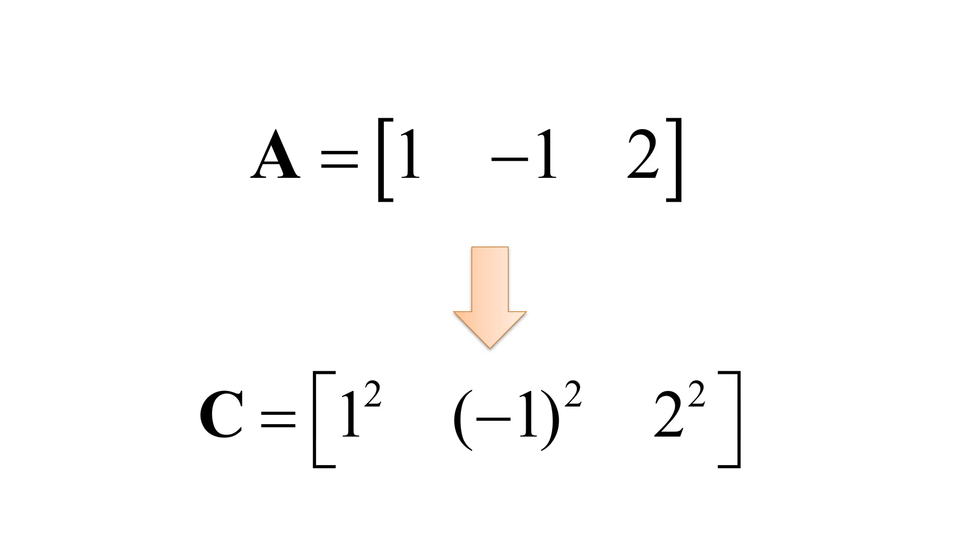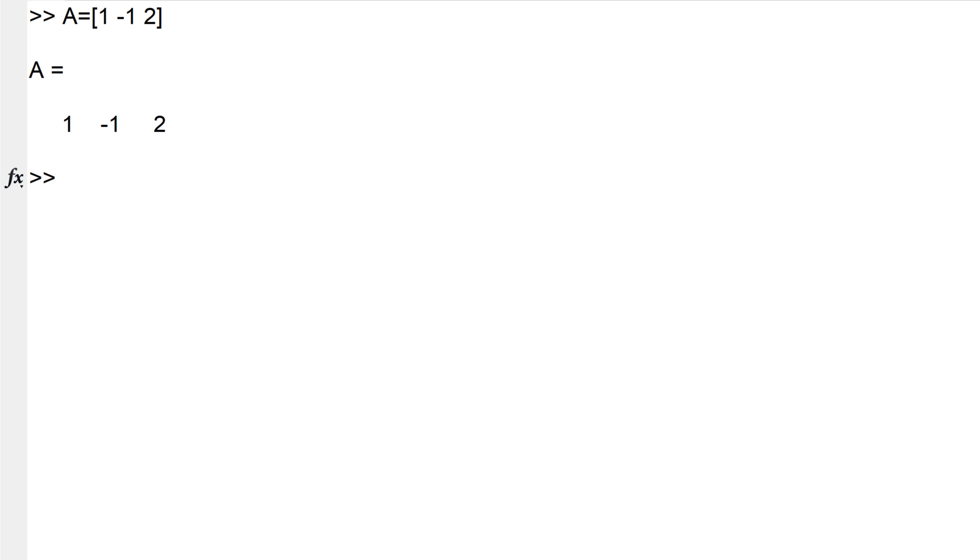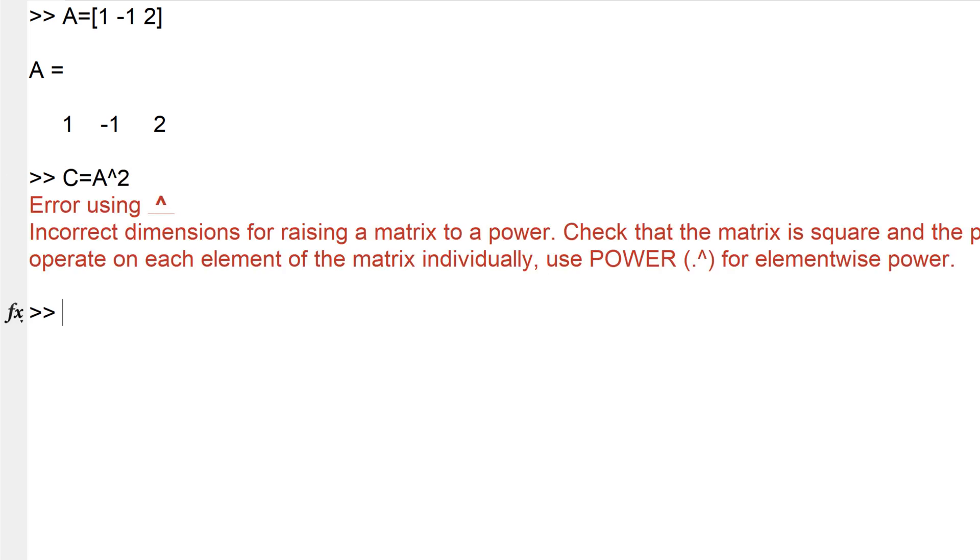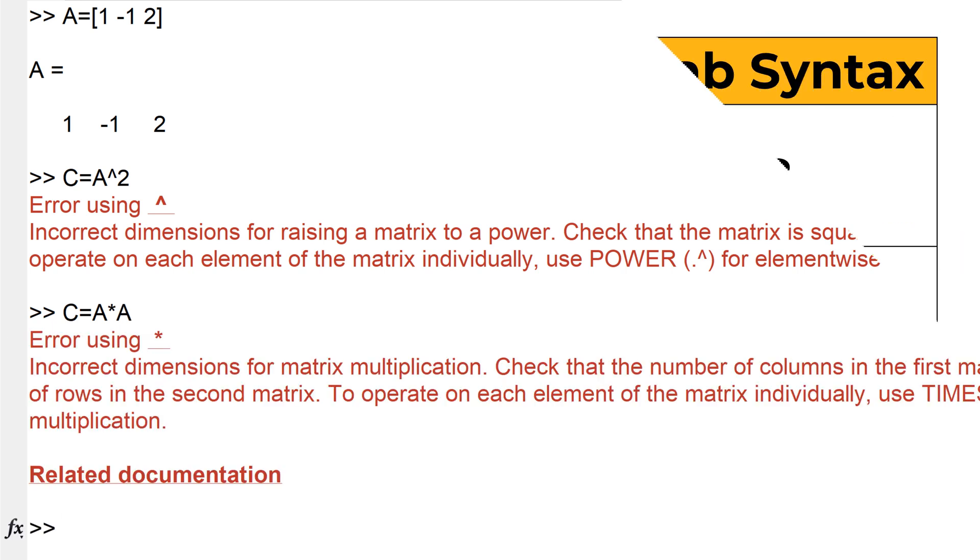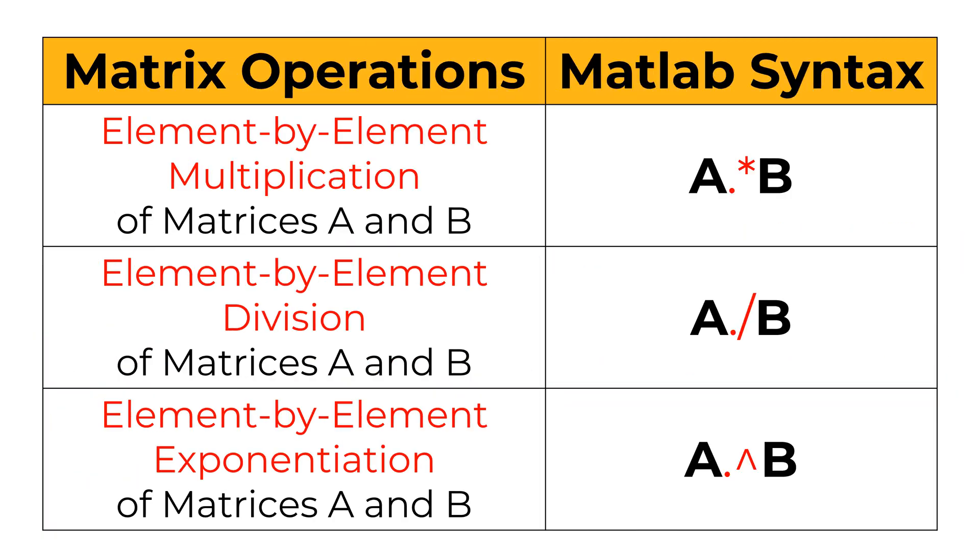Consider 1 by 3 row vector A and we would like to square all the elements to create 1 by 3 row vector C. To do this, you may quickly come up with C equals sign A square. However, it shows an error message since the inner matrix dimension does not match. The column size of the first matrix A is 3 and the row size of the second matrix A is 1, which is different. Same thing happens when you use A times A. What you want is to do element-wise square in all elements of A. For the element-wise operation, you can use period before your operator. You can use period for division and exponentiation as well.